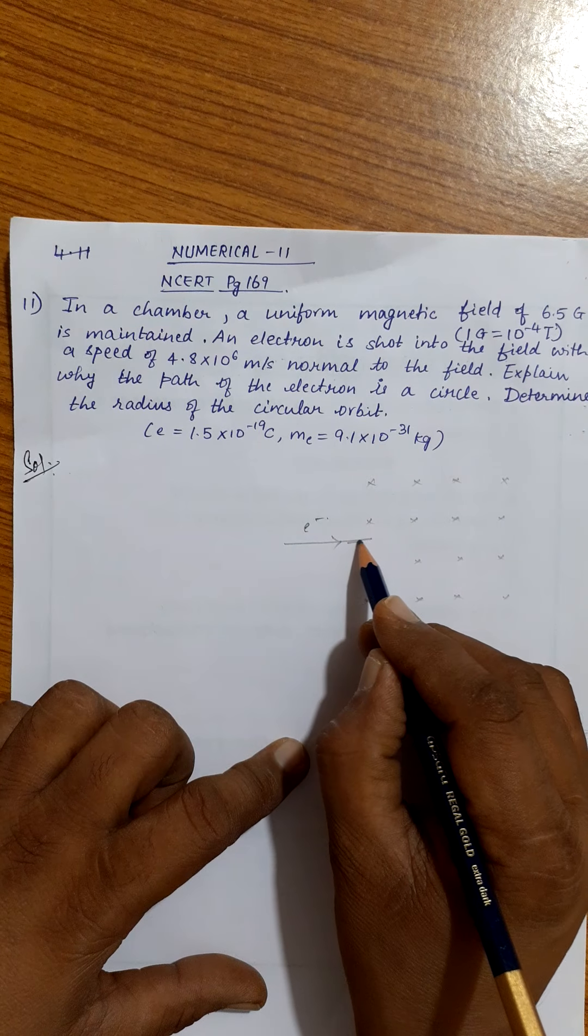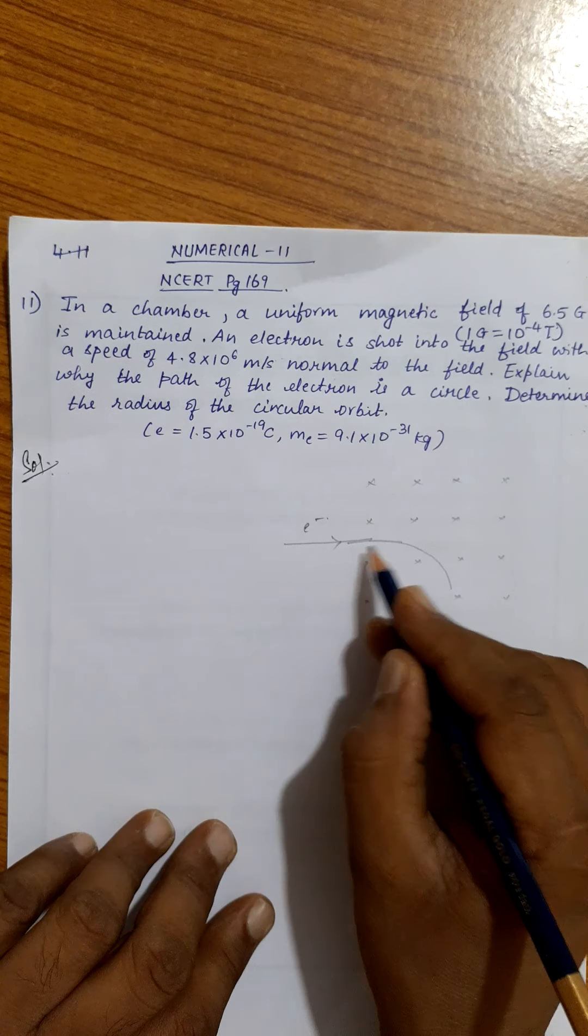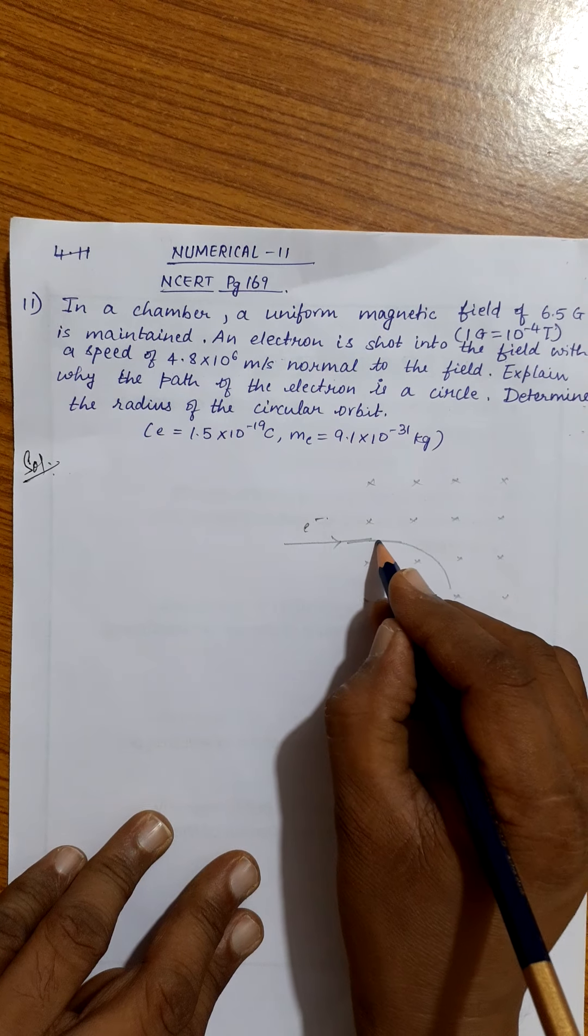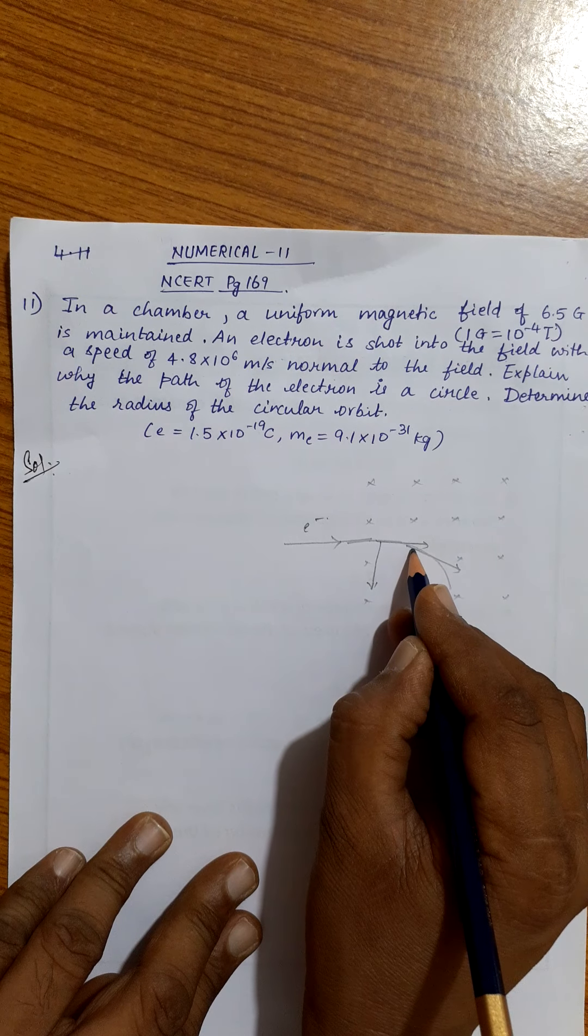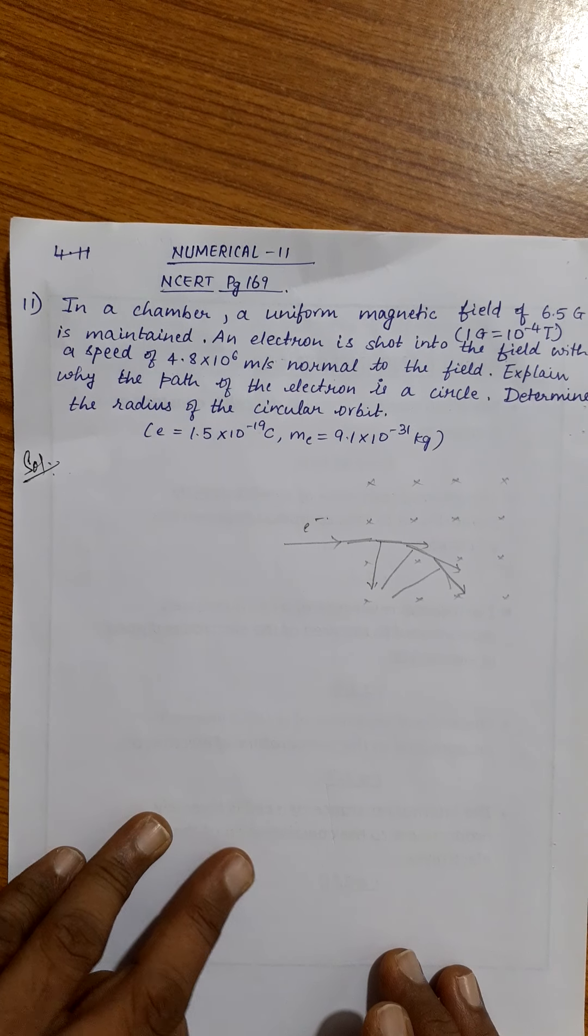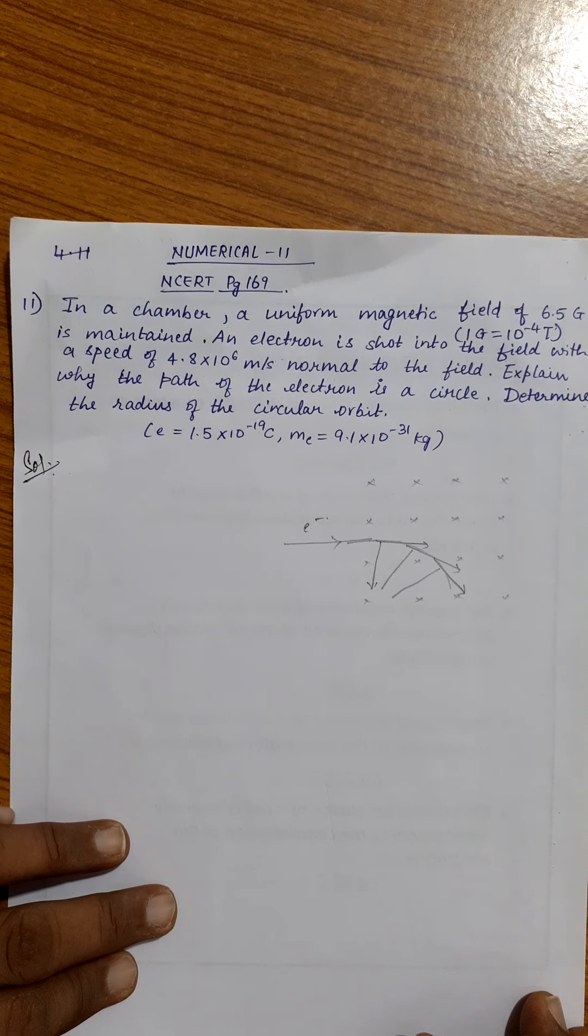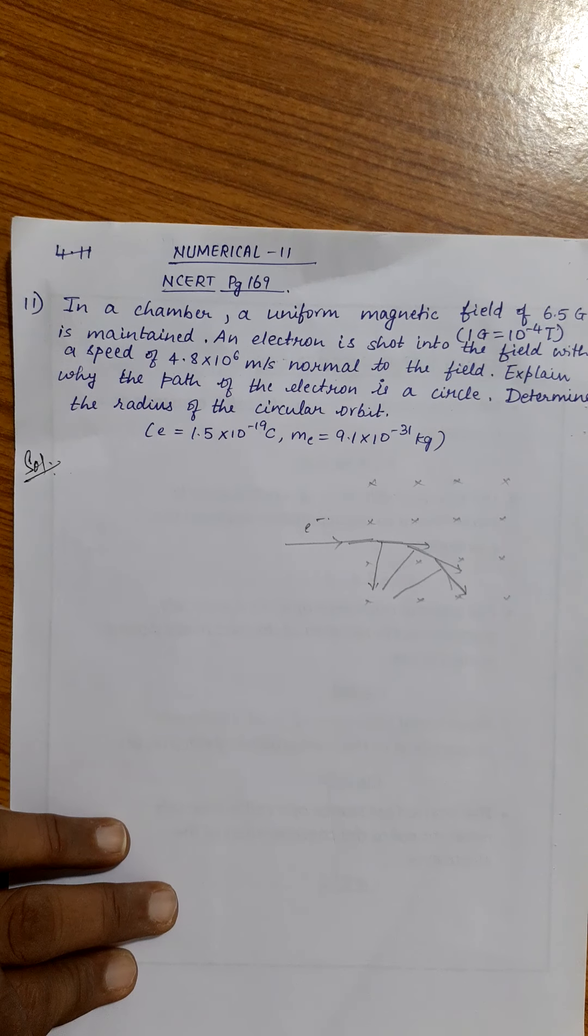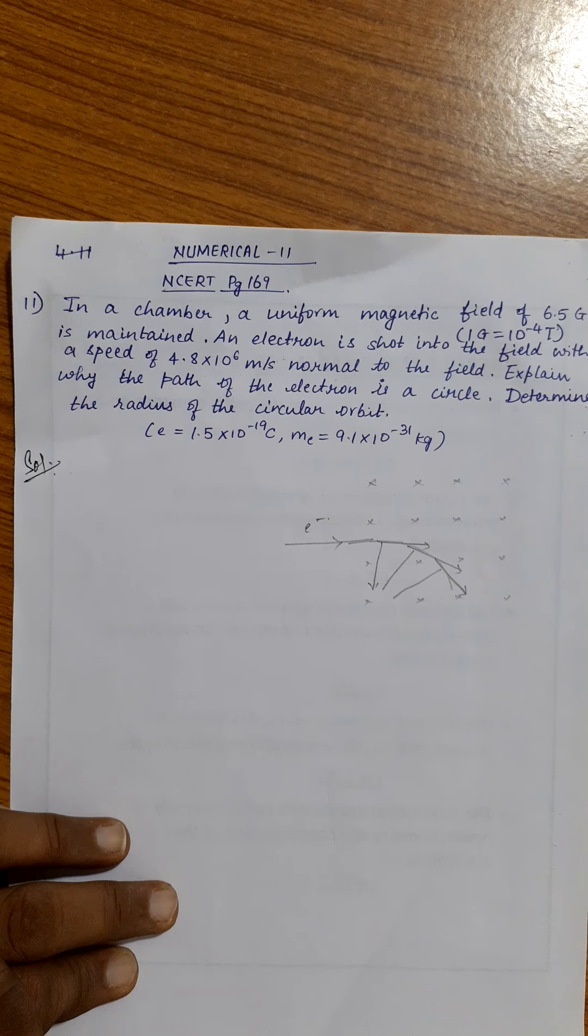Why does it move in a circular path? Because the force is perpendicular to velocity. If the velocity is like this, the force will be perpendicular to it. In which case is force perpendicular to velocity? That particular force is responsible for the change in the direction of the charged particle from moment to moment. That force provides a centripetal force. That's why it follows a circular path.